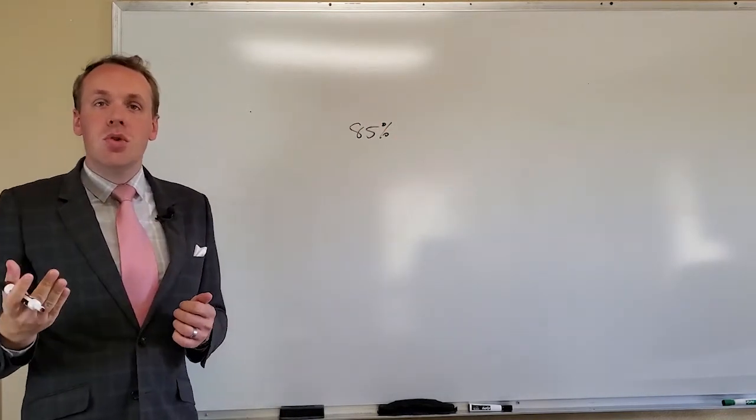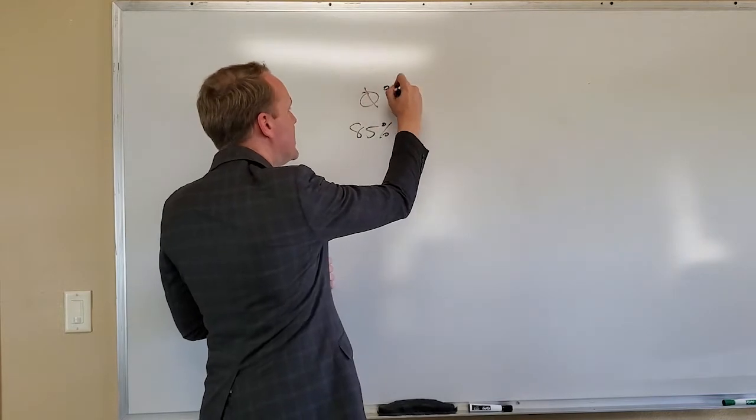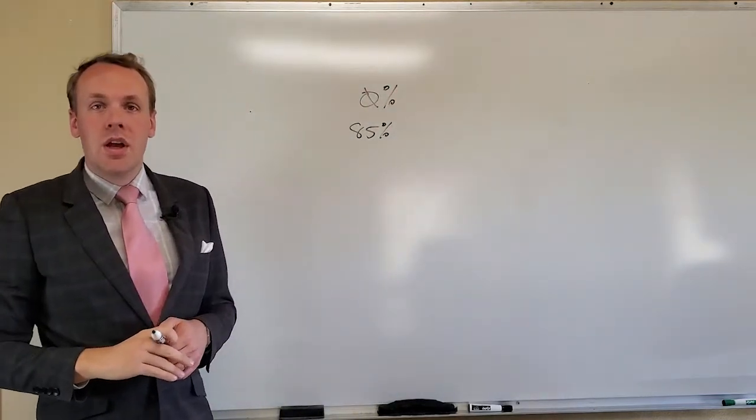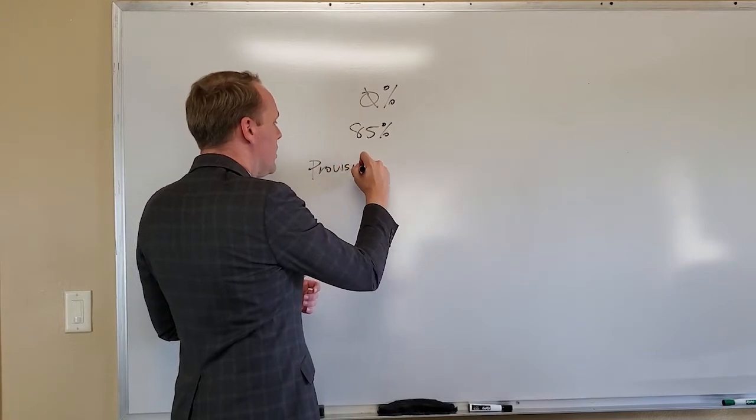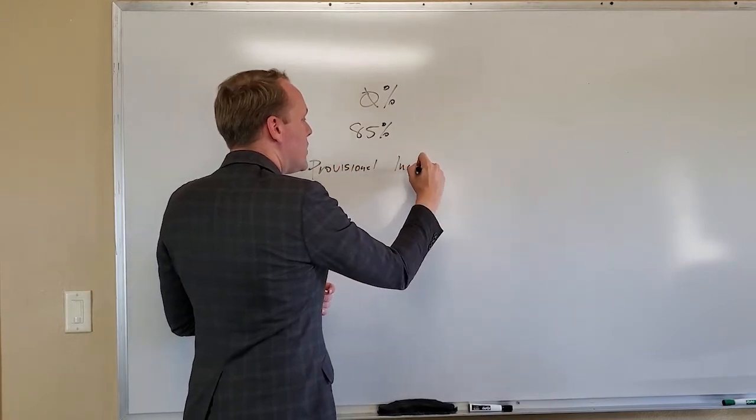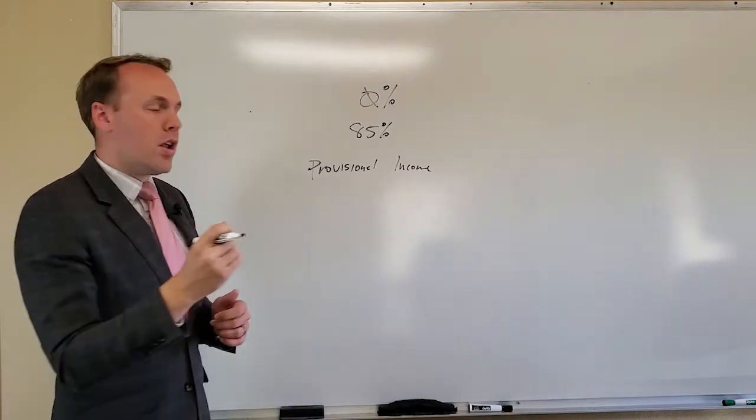However, did you know there are ways that you can get your Social Security 0% taxable? It depends on what's called your provisional income scale. Now your provisional income scale is calculated based off of the following.